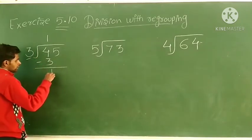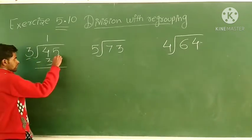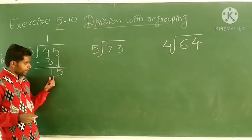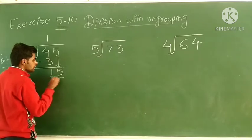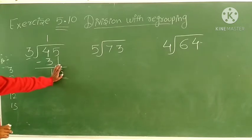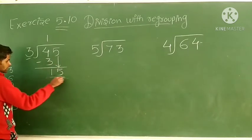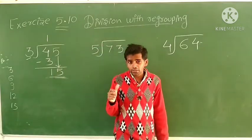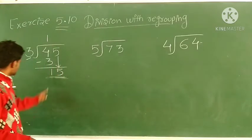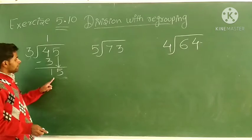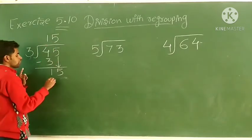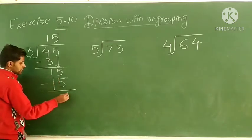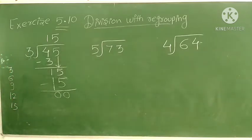We write 1 in the quotient and subtract: 4 minus 3 is 1. The next digit, 5, comes down to make 15. Now we divide 15 by 3. Checking the table: 3 fives are 15. So we write 5 in the quotient and subtract: 15 minus 15 equals 0. The remainder is 0.